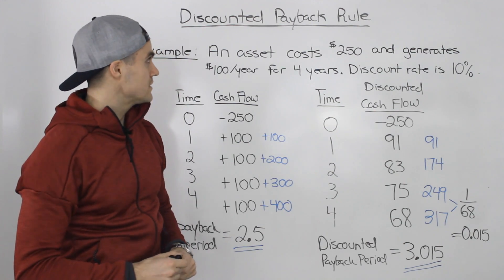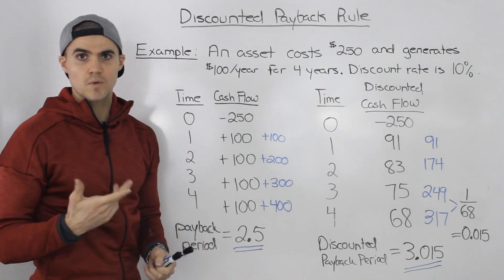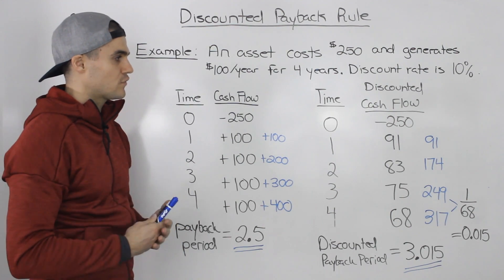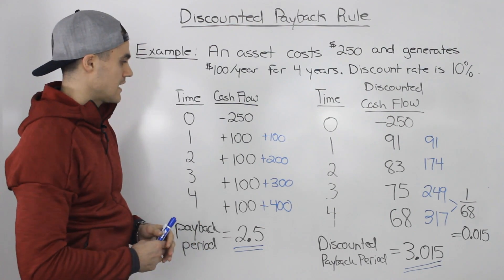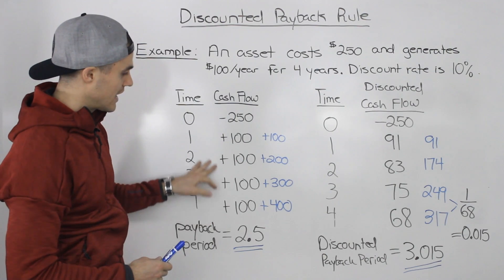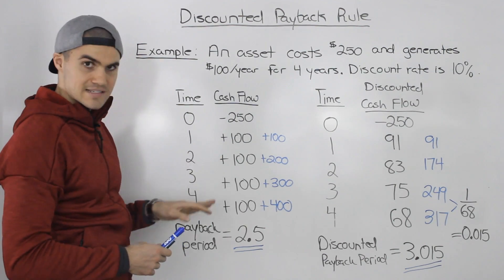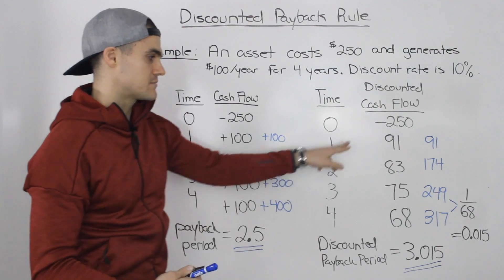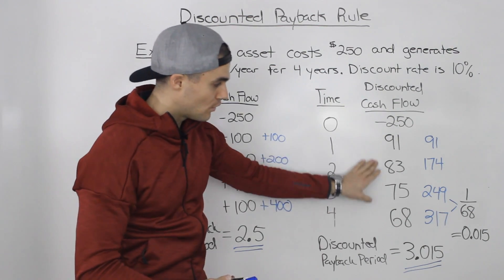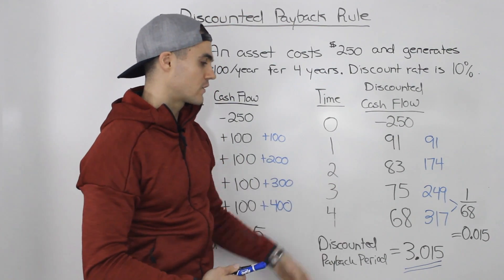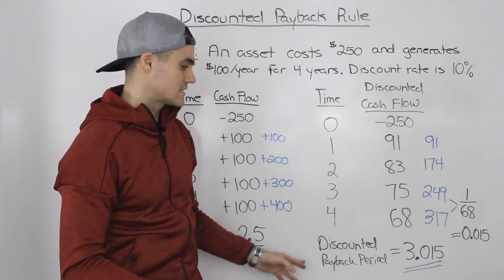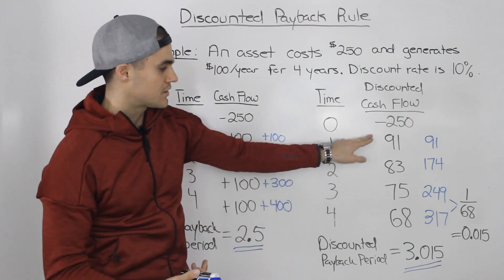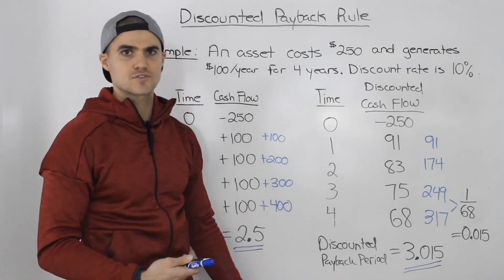This is very similar to the payback rule — that's why I mentioned watching that video first. The only difference is that you take the future cash flows the asset generates and discount them to time zero, and then use those discounted cash flows to figure out the payback period. In this case it's called the discounted payback period because you're using discounted cash flows.